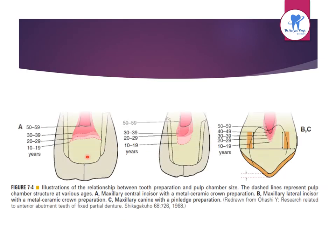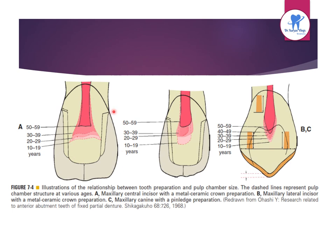Tooth preparation must account for the geometry of the pulp chamber. Pulp size can be evaluated on a radiograph and decreases with age. This shows the maxillary central incisor with metal ceramic crown preparation, maxillary lateral incisor with metal ceramic crown preparation, and maxillary canine with a pin ledge preparation. The dashed lines represent the pulp chamber structure at various ages.